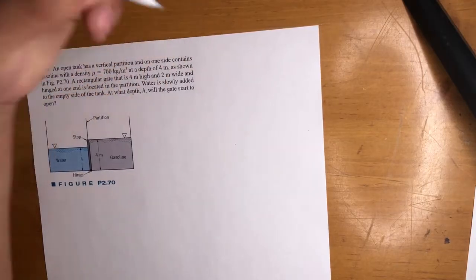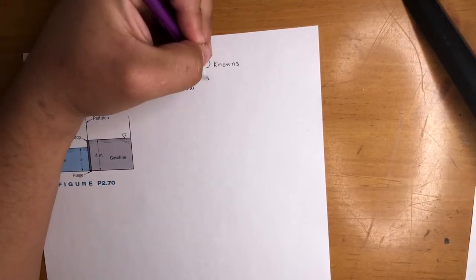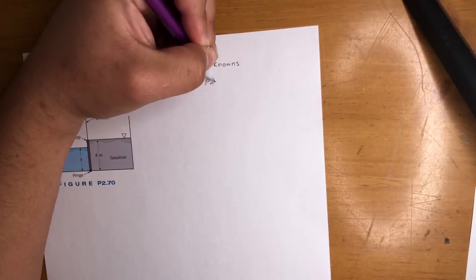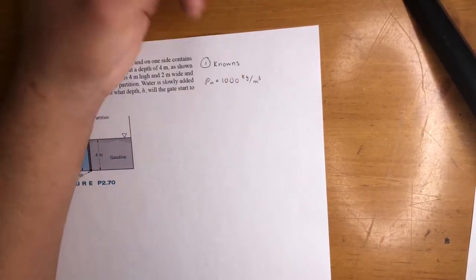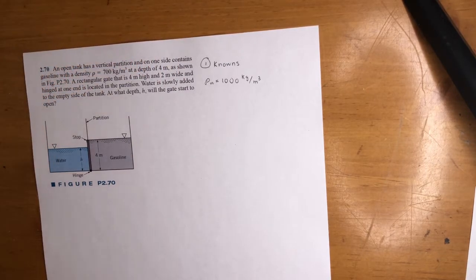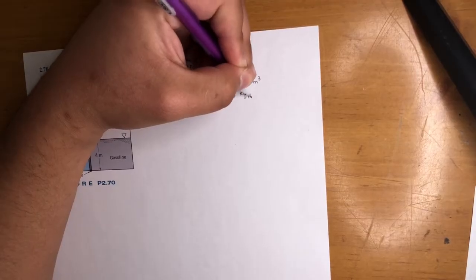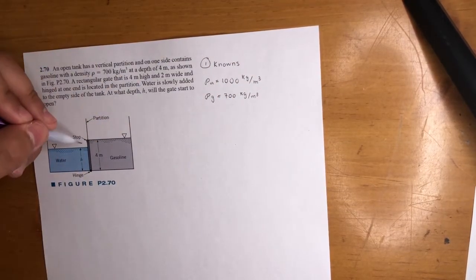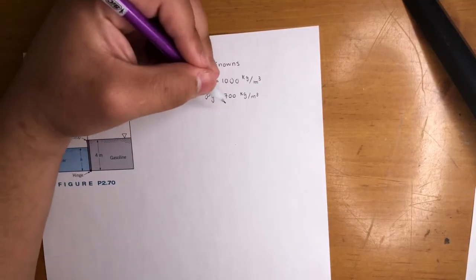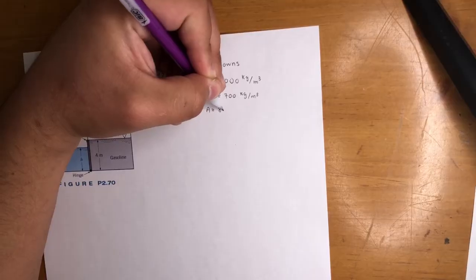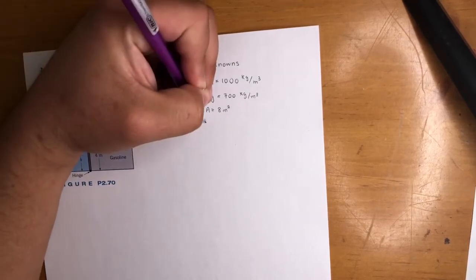Alright, so first step, write notes. Let's see, we got, we know we're dealing with water, right? So we know the density of water is 1,000 kilograms per meter cubed. We're dealing with gasoline, right? Do they give us that? Yes, they do. Density of gasoline is 700 kilograms per meter cubed. This partition right here, it's 4 meters high and it goes in 2 meters. So that area is 8 meters squared, right? Because gasoline goes up perfectly to it.